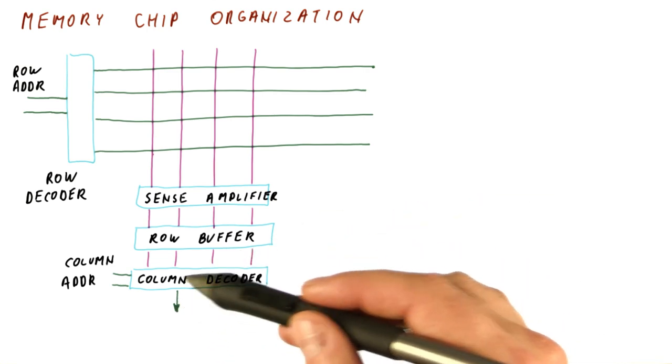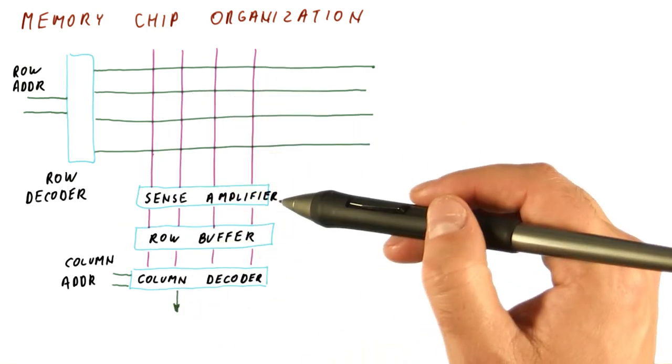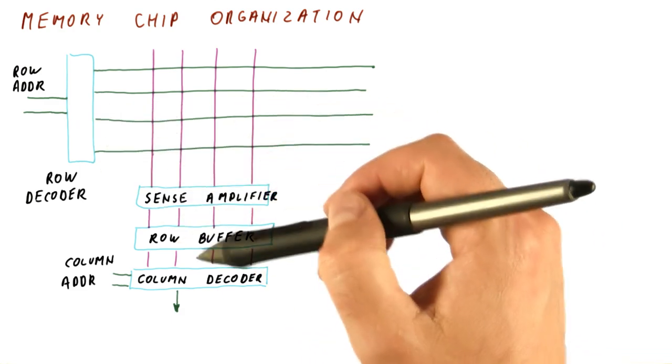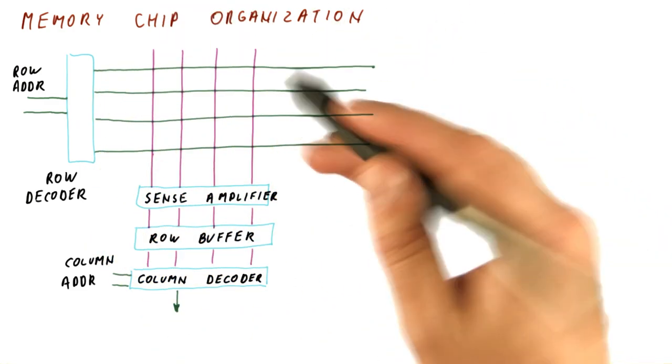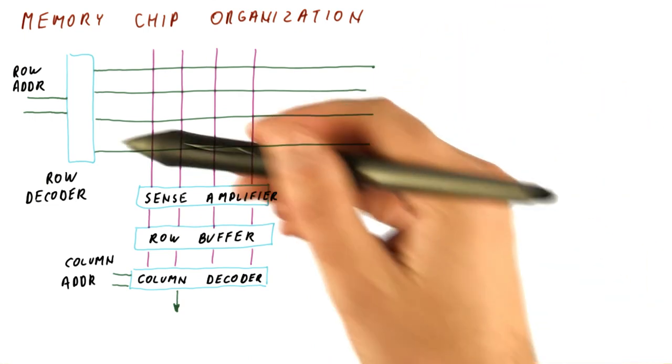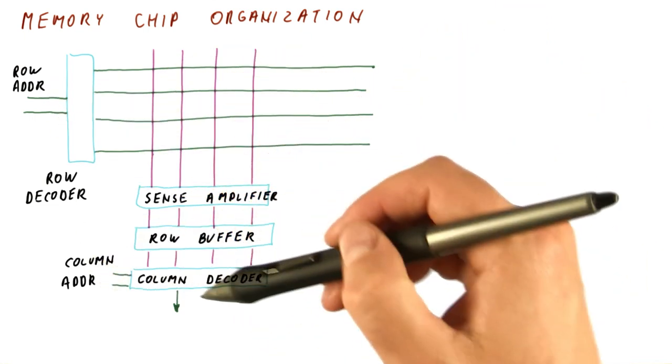If we want to build something that has more than just one bit of data for each location, we will replicate this. So we will have, let's say, two of these, give them the same row and column address, and now they output a two-bit value.